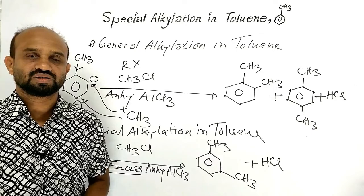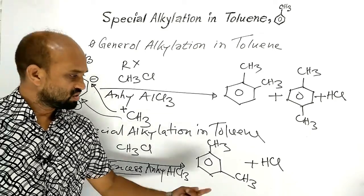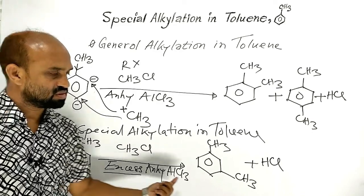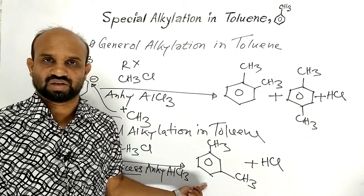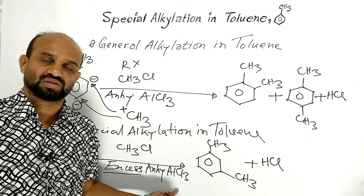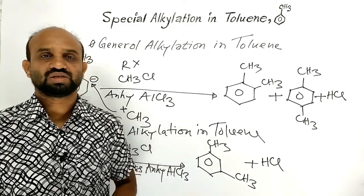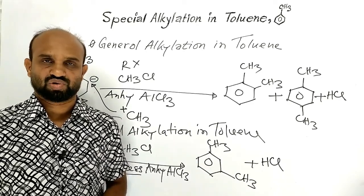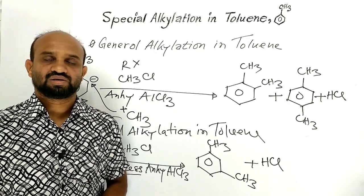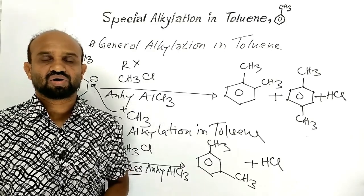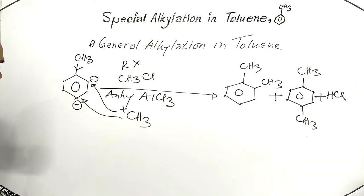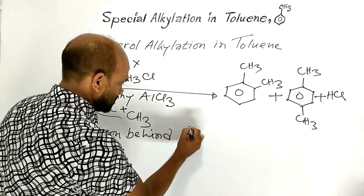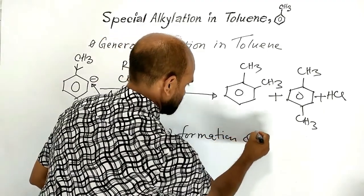Now let's see the reason behind this special reaction — the formation of meta-xylene. Toluene is supposed to produce ortho-xylene and para-xylene, not meta-xylene. But when excess aluminum chloride is used, meta-xylene is formed instead. This is the speciality of alkylation of toluene in the presence of excess anhydrous aluminum chloride.